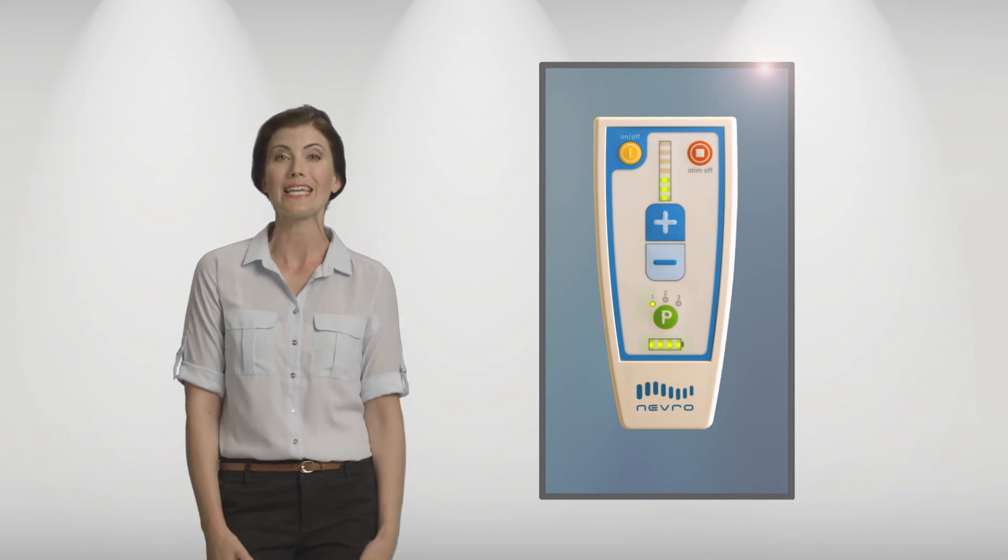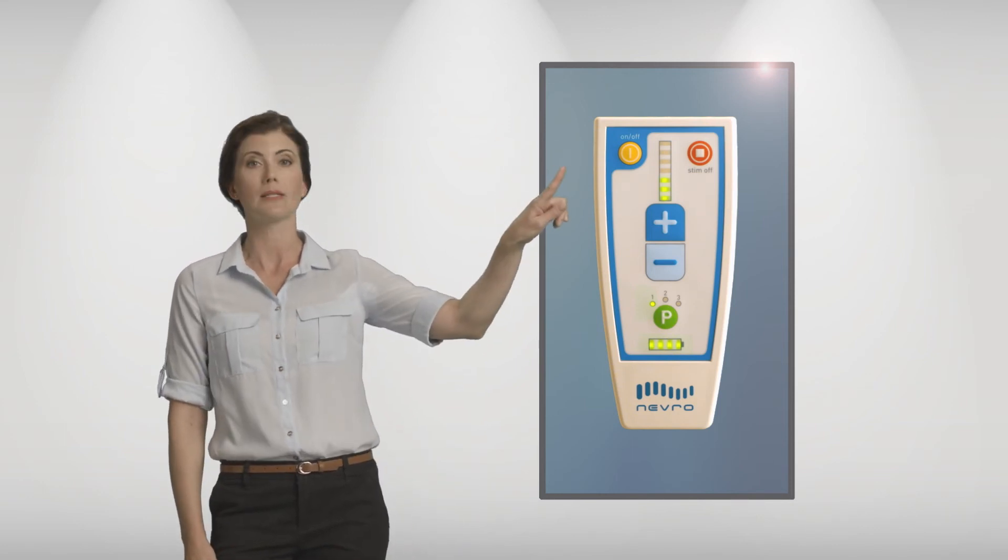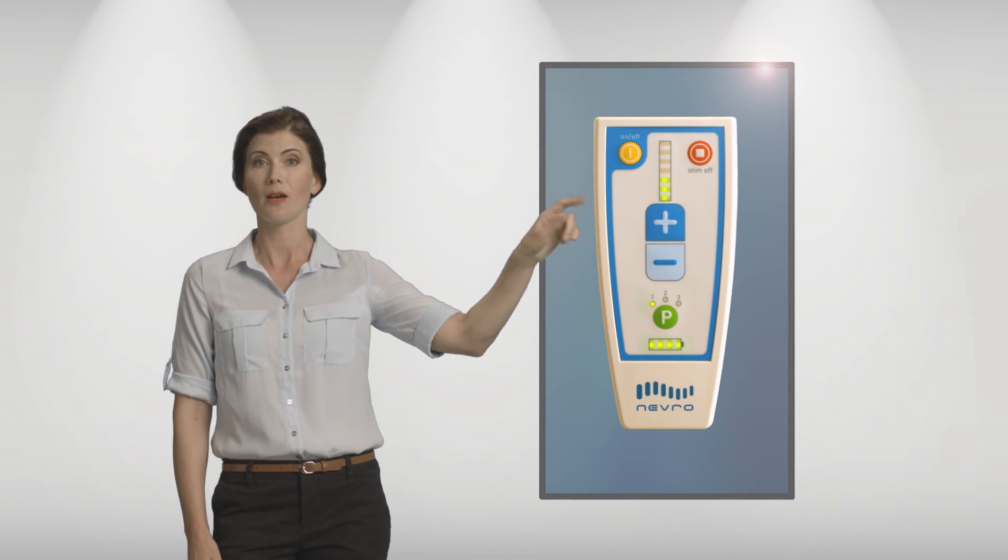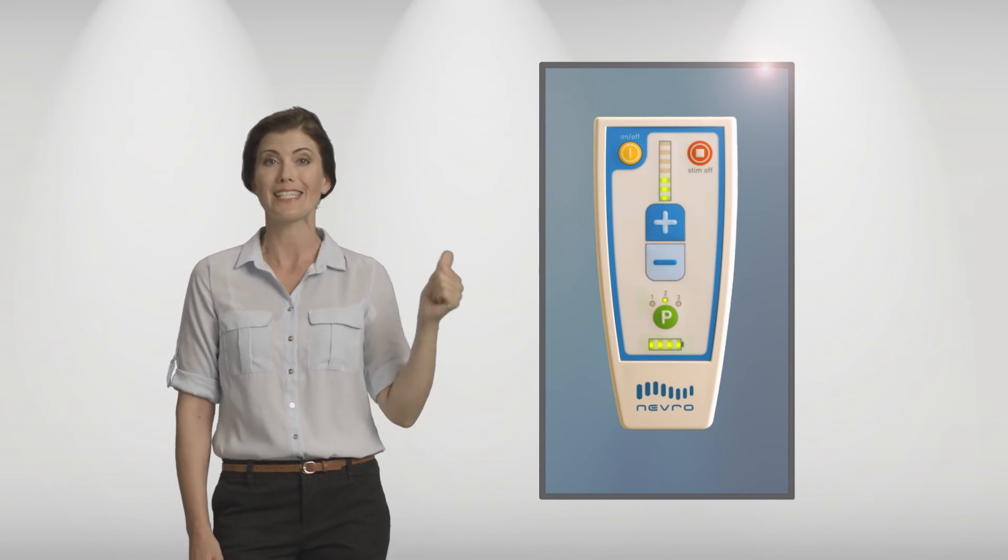When the schedule indicates it's time to change programs, hold the P button down. When it flashes, press it again to move the light to the next number. The next program will automatically start at the correct number of lights for your therapy.